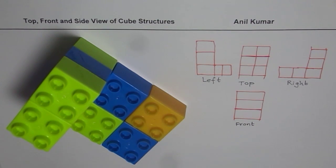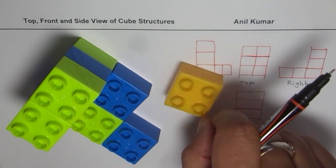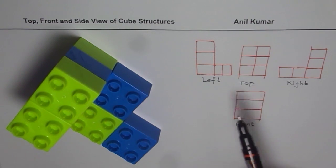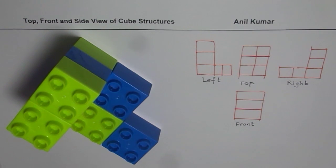As an exercise, let's make a small change to this block — I'll remove one cube. In that case, how do the top, front, right, and left views change? And which view really doesn't change?